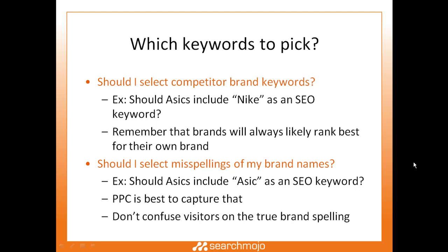Two common questions about keyword selection: First, should you select competitor brand keywords — for example, should ASICS include Nike as an SEO keyword? The answer is no. Brands will almost always rank best for their own brand name, so it's going to be very tough to oust Nike from their own organic rankings. This is probably better handled through pay-per-click advertising using a strategy called conquesting, but it's not appropriate for SEO.